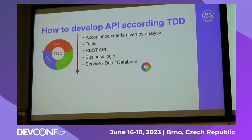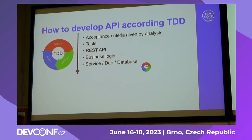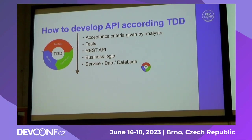So how do you develop an API according to TDD? You have acceptance criteria. You can turn them into tests. You can provide a REST API for the tests. And after that, there is time for business logic, and after that for creating services and database if needed. And continuously, you can run the tests to check that everything you have done is correct.